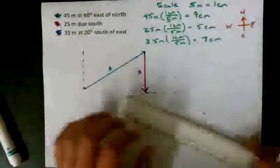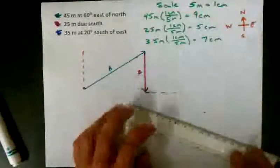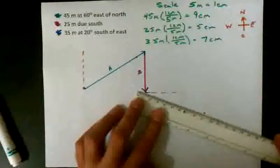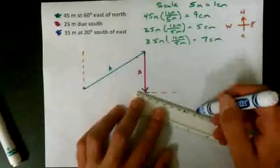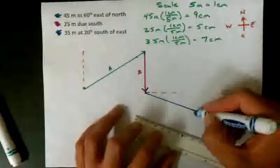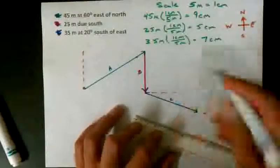OK, so this should be 7 centimeters long. And I'll label that vector C.